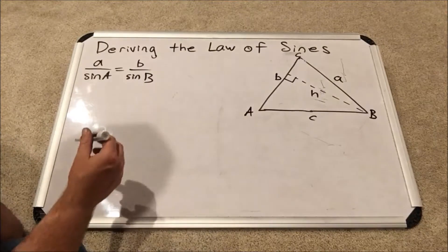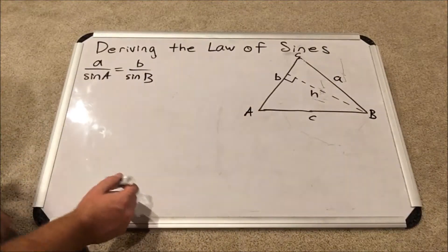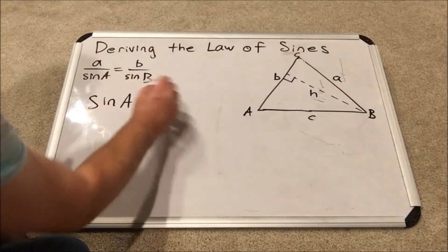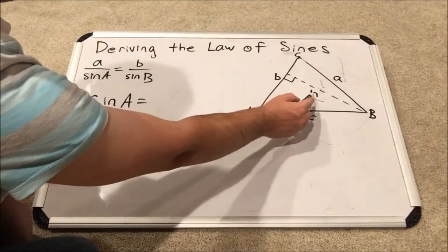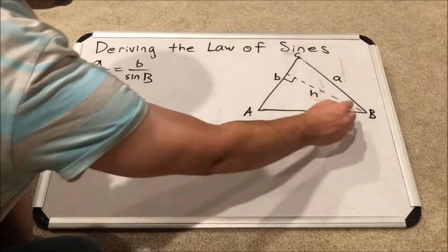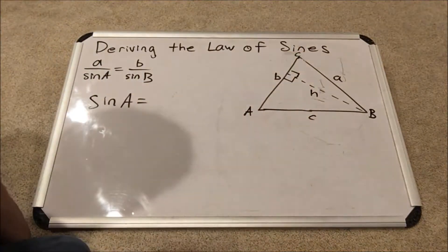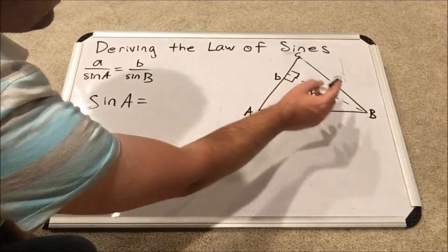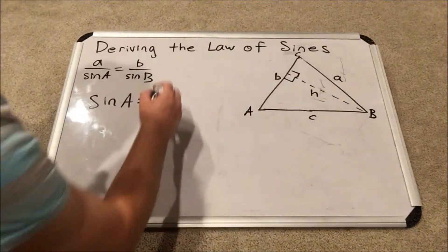So this time, what we see if we do the sine of angle A is that it equals opposite side, which is H for this particular triangle. Again, I've cut two right triangles out of an oblique triangle with the altitude. H opposite over C hypotenuse.